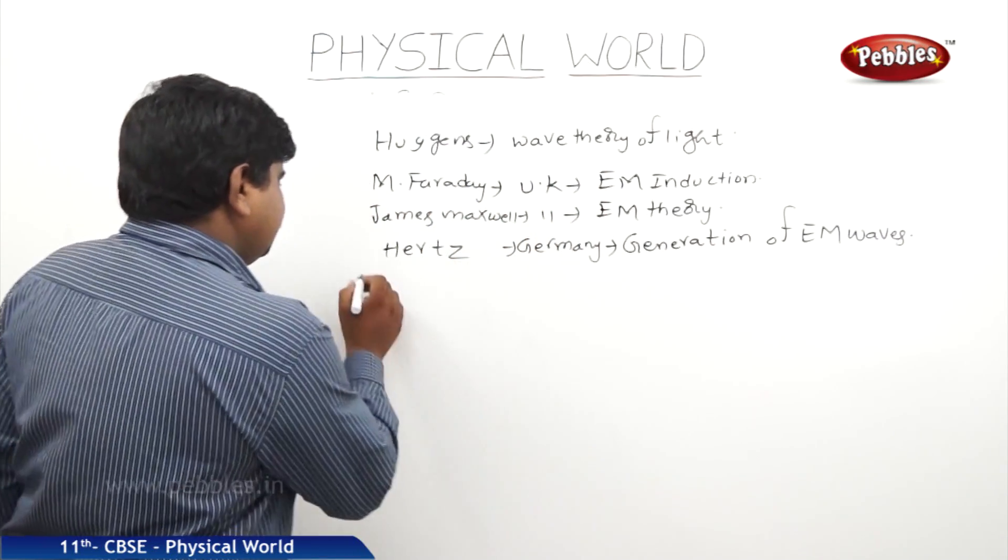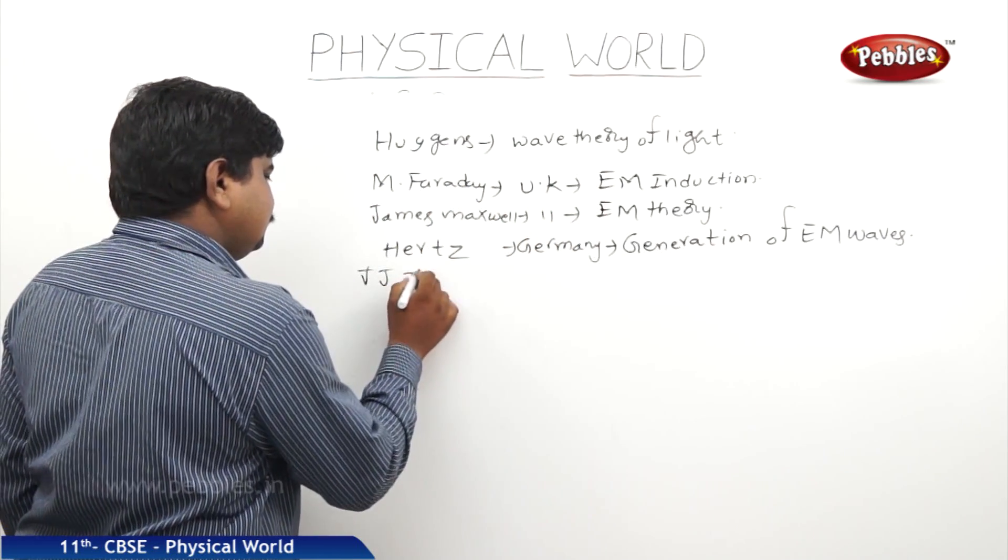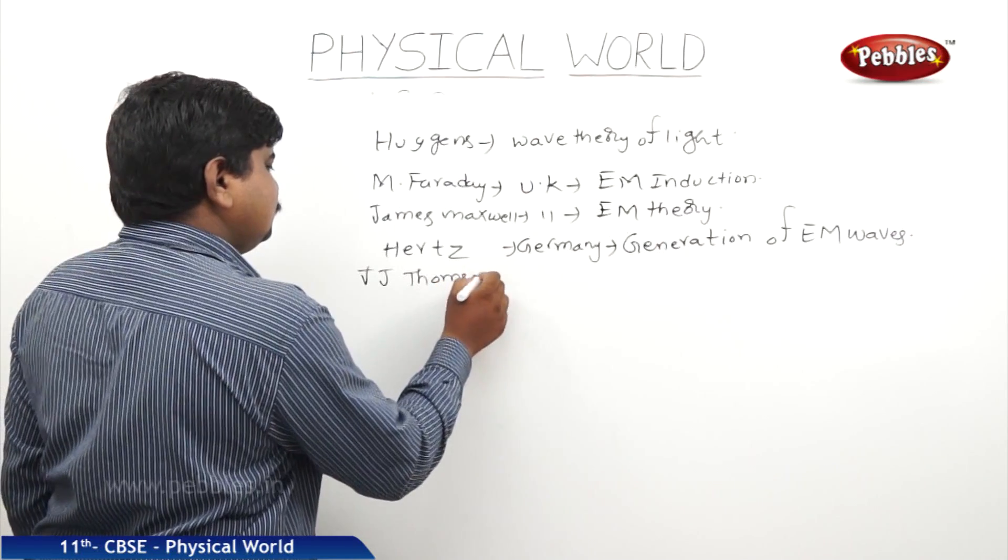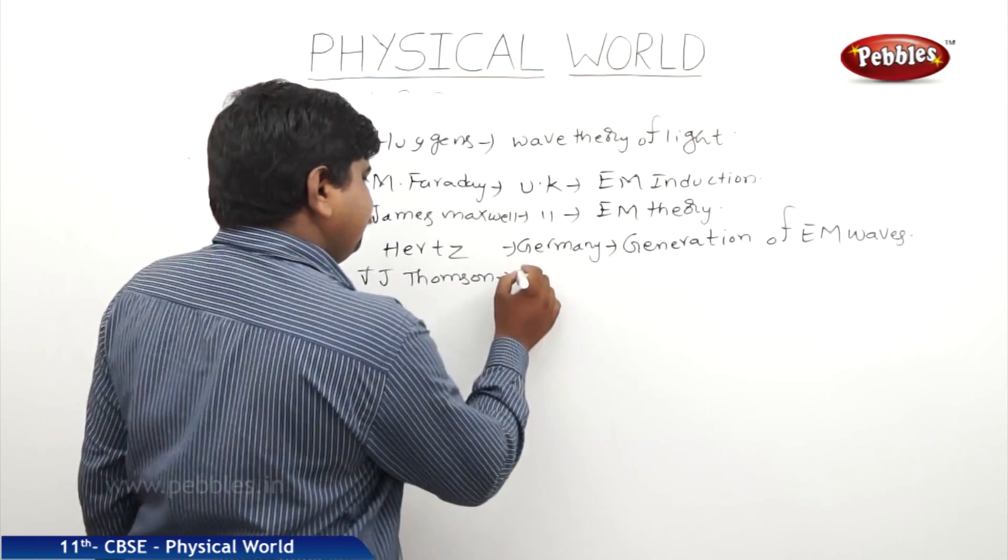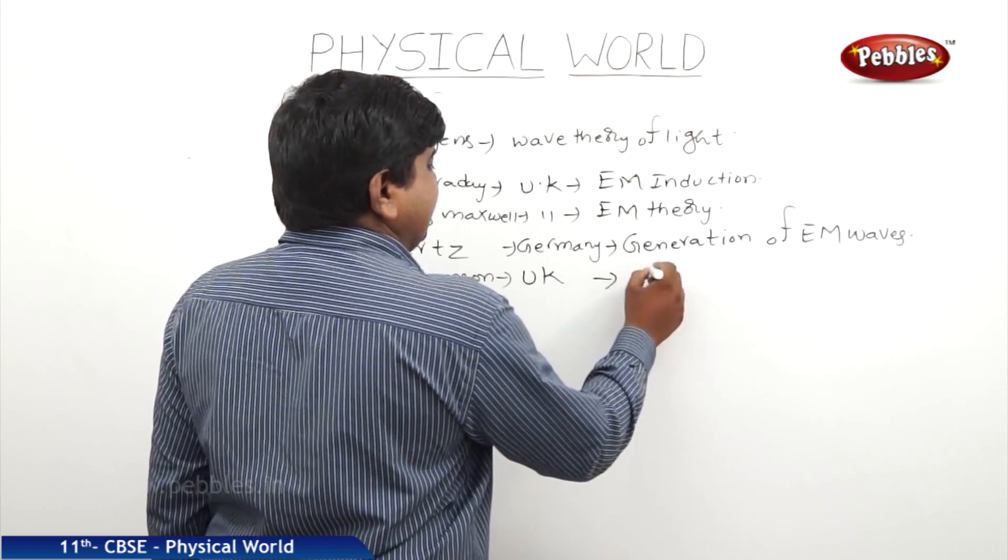The next scientist was JJ Thomson, he is from UK, who has discovered the electron.